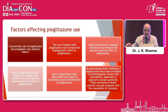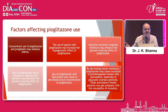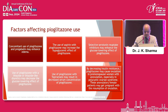There are various factors affecting pioglitazone use. Concomitant use with pregabalin may enhance edema, so be careful when using it for diabetic neuropathy. Aspirin with pioglitazone may increase its hypoglycemic effect. Selective serotonin reuptake inhibitors may enhance its glucose-lowering effect. Thiazide or thiazide-like diuretics may decrease its glucose-lowering effect. Use with topiramate may result in decreased serum concentration. By decreasing insulin resistance, pioglitazone may cause ovulation in premenopausal women with anovulation, especially in polycystic ovary syndrome, so these patients may get pregnant with resumption of ovulation.